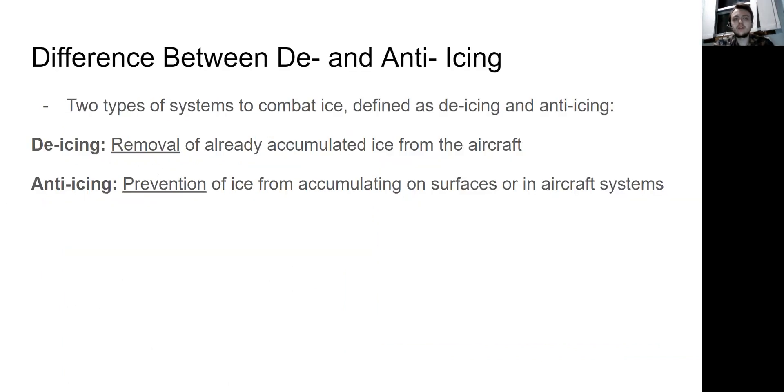So there's a difference between de-icing and anti-icing. De-icing means it's the removal of already accumulated ice from the aircraft, and anti-icing is preventing ice from accumulating on the surfaces or in aircraft systems.